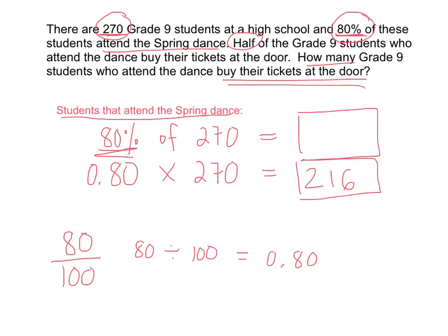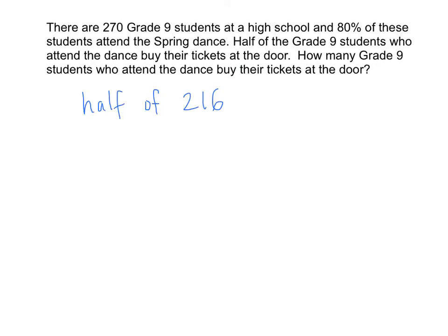So what does that number tell us? 216 students attend the spring dance. But have we answered this question yet? No — the question asks us how many grade 9 students who attend the dance buy their tickets at the door. Well, 216 students attend the dance, but half of these students buy their tickets at the door. So now we need to figure out what's half of 216. Since we're using percent to solve this problem, can you show a percentage that would represent half? Remember, percent is out of 100.